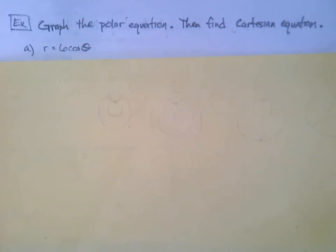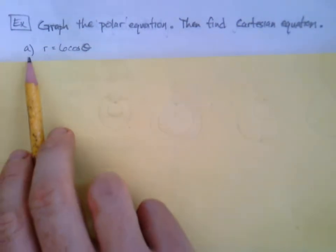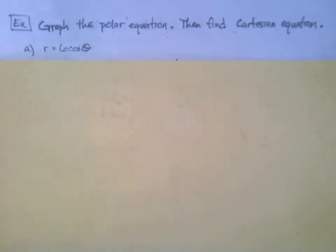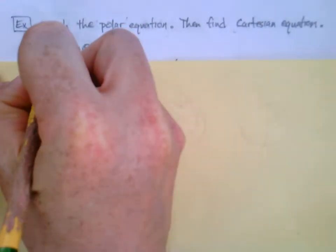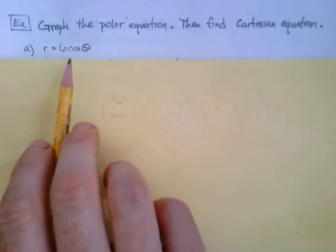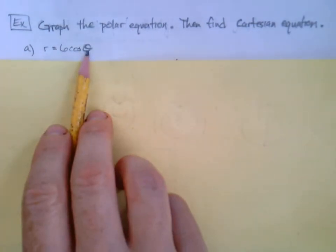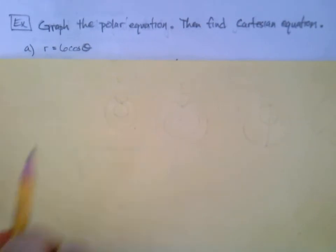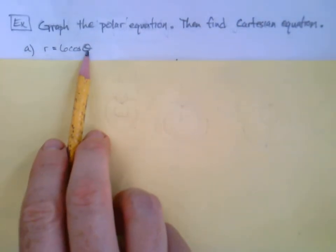Okay, we're gonna start with r equals six cosine theta. Nothing crazy right - we got our independent variable and our dependent variable. So what we're gonna do is just plug in a bunch of different values for theta.